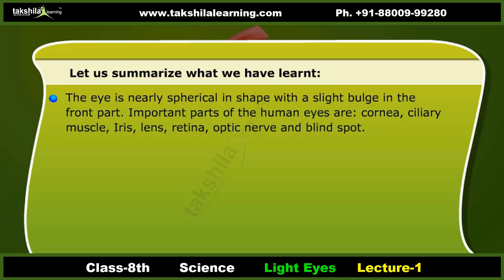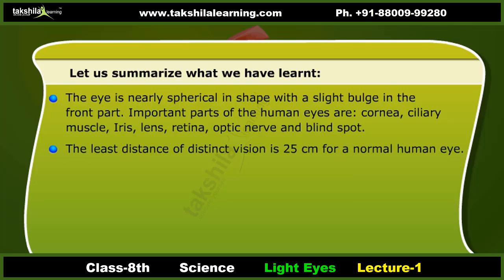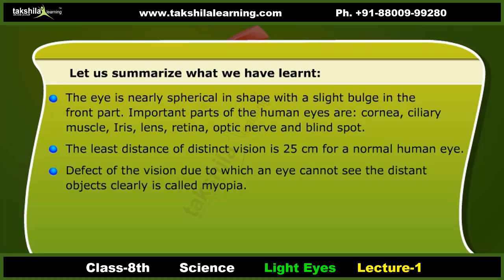Summary: The eye is nearly spherical in shape with a slight bulge in the front. Important parts of the human eye are the cornea, ciliary muscle, iris, lens, retina, optic nerve, and blind spot. The least distance of distinct vision is 25 centimeters for a normal human eye.